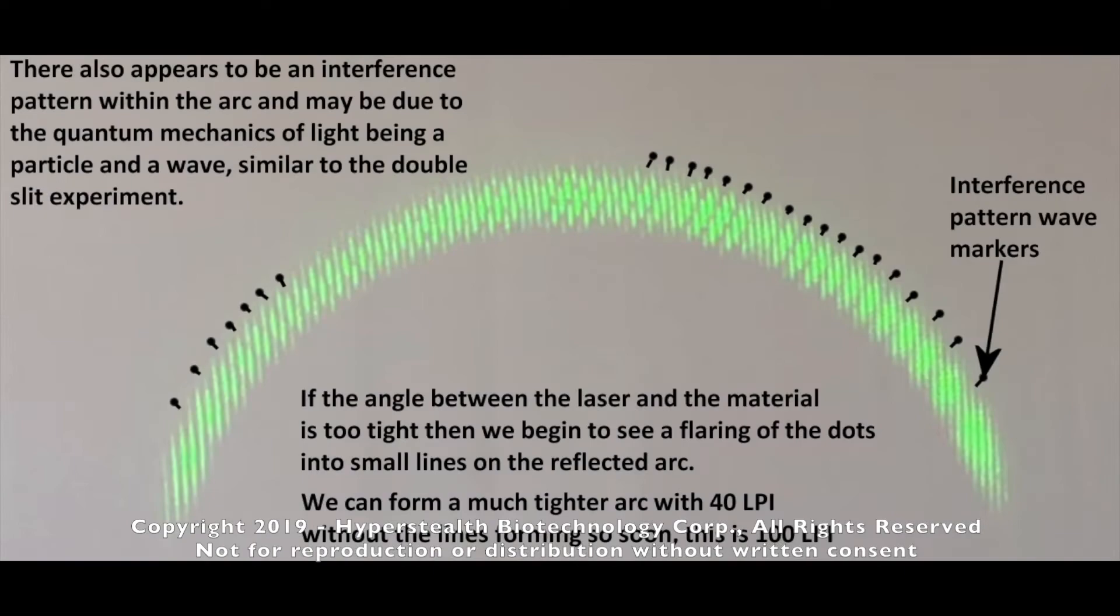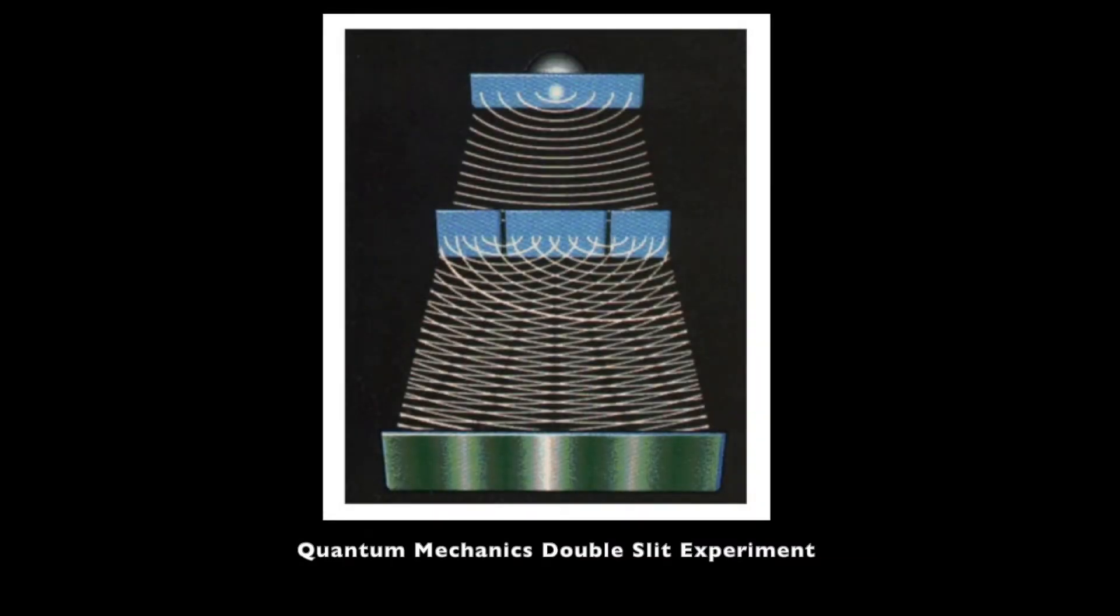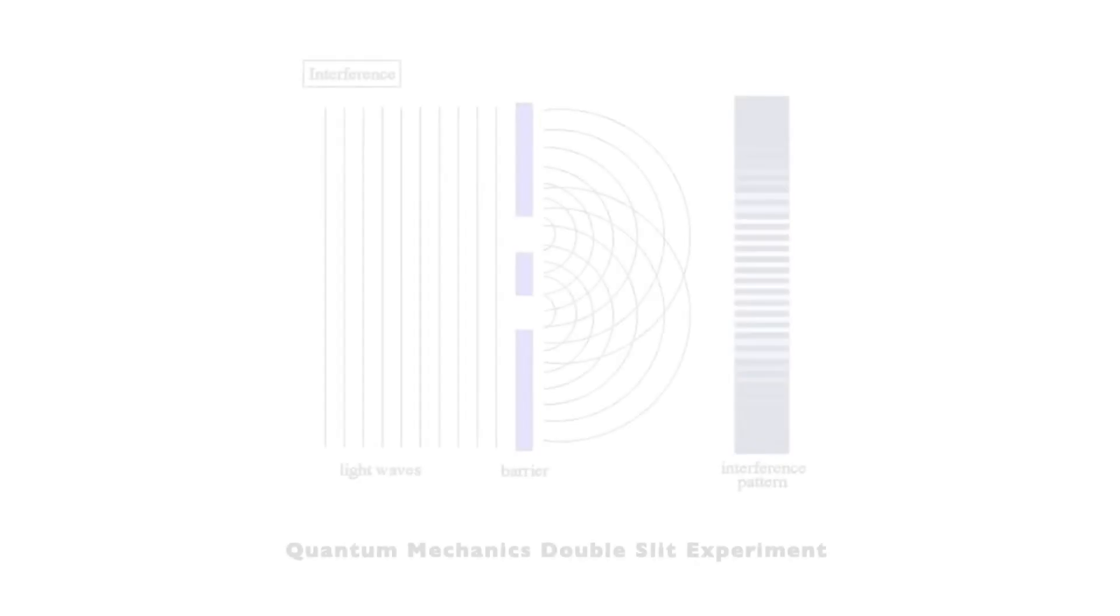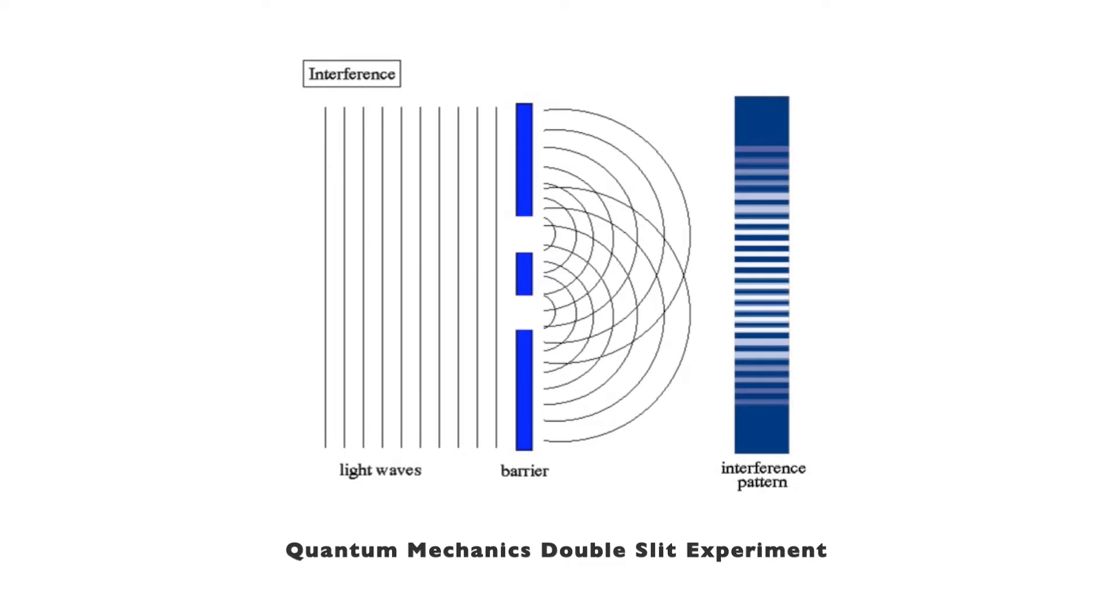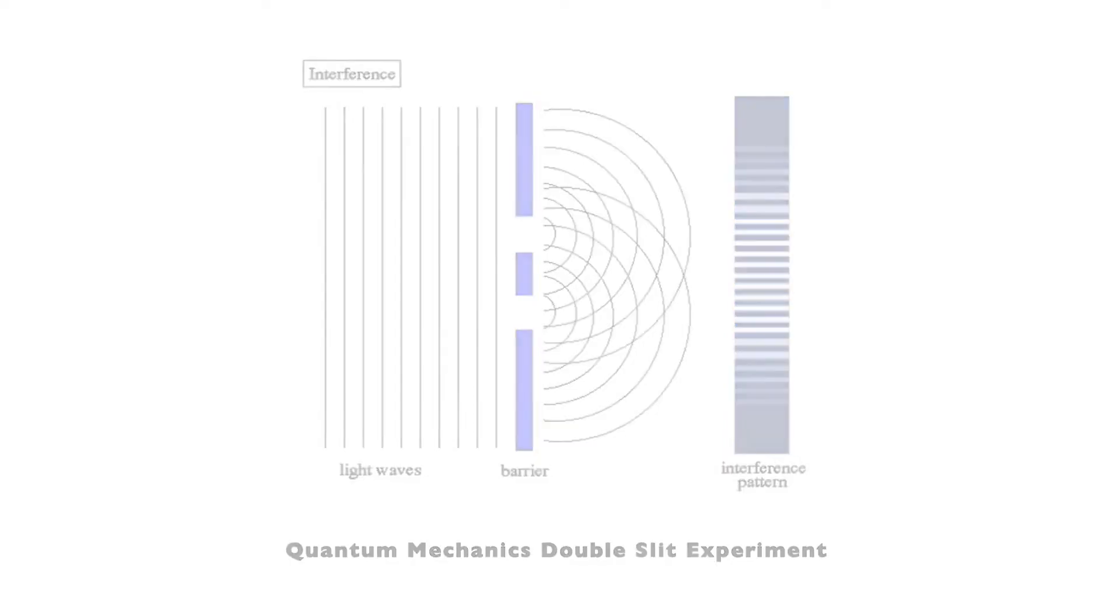I then noticed an interference pattern within a tight arc I had made, which made me think that quantum mechanics was at play. If you're familiar with the double slit experiment in quantum physics, if we aim a coherent light source at two slits, we expect to see two lines on a wall behind the material, but we get multiple lines forming with the strongest in the middle and the weakest at the sides.